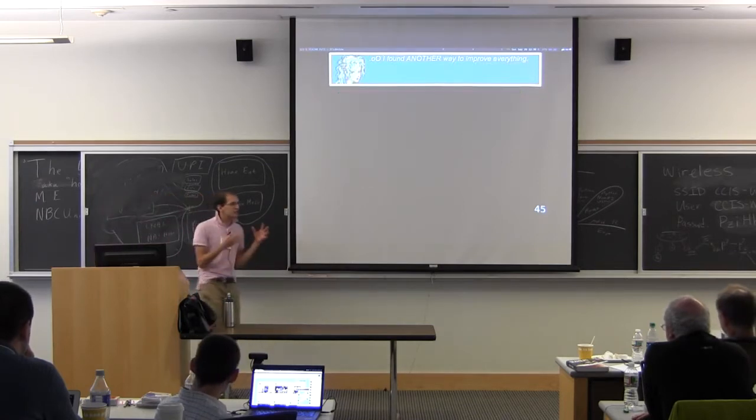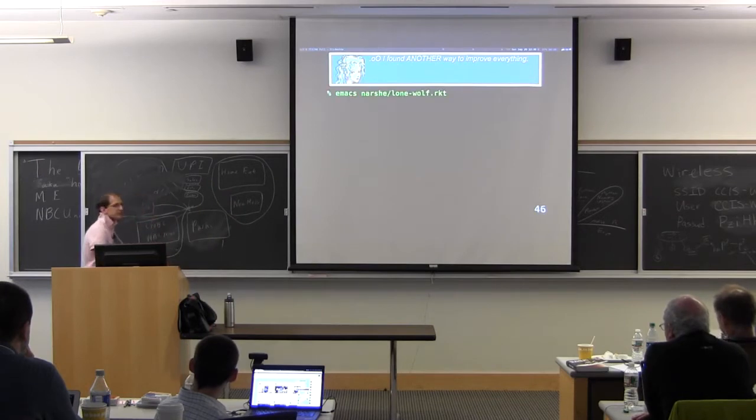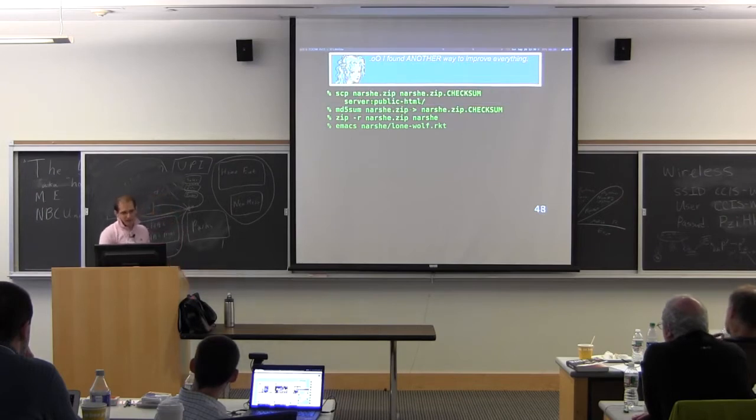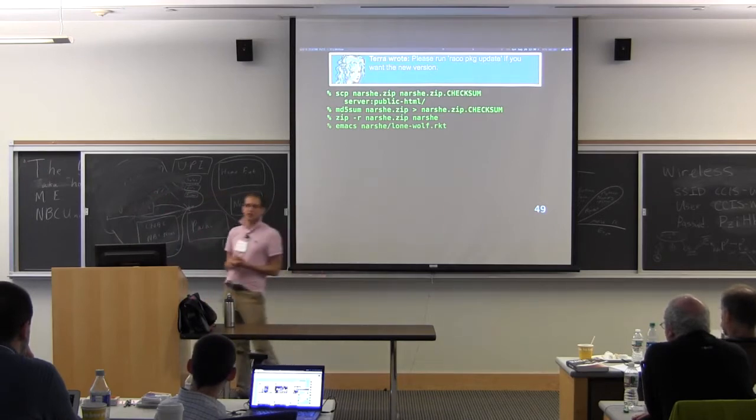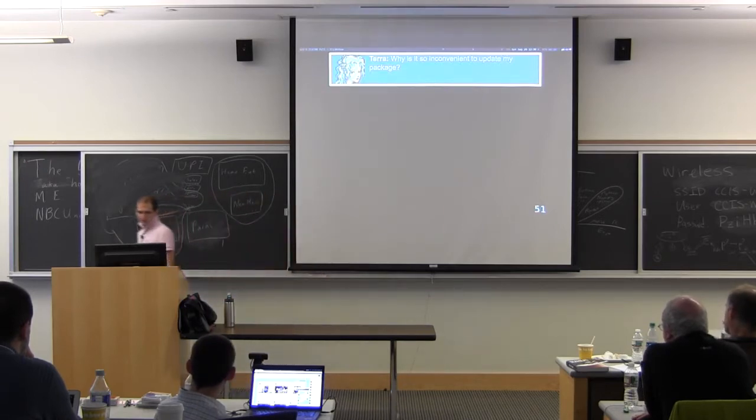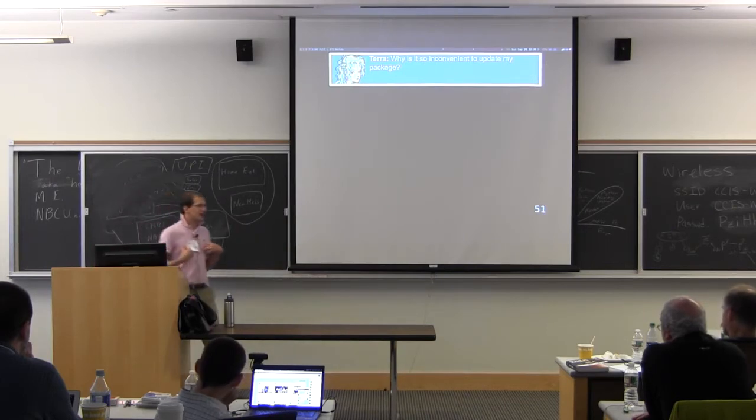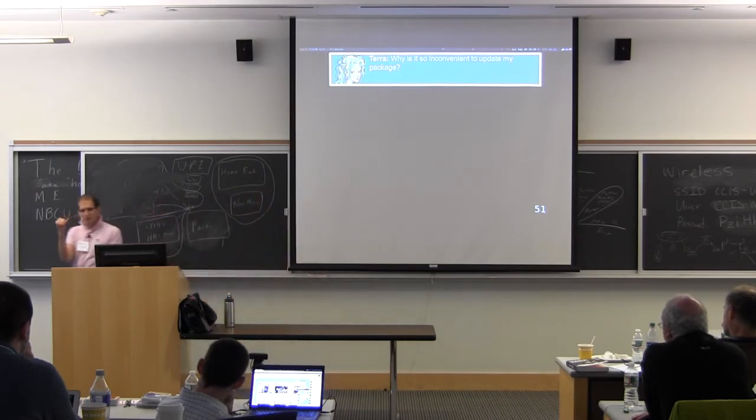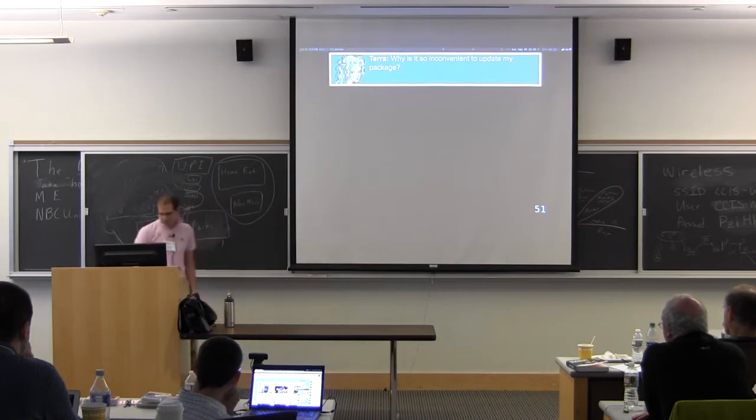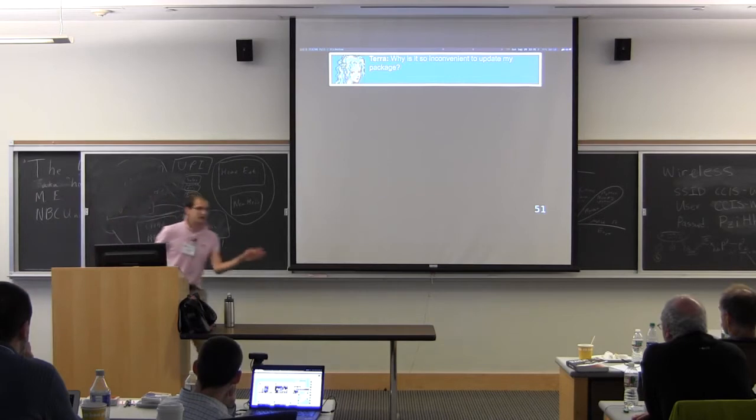So now whenever she modifies her program, she goes through a big process. She says, I change my program, I re-zip it, I recreate the checksum, now I send them both to the server and then I go email everybody and say, you should run Racko package update to try to get the new version. So she then says, why is it so inconvenient to update my package? I have four steps. There's create the zip, create the checksum, copy them, and email everybody. Four, that's way too many steps, right?